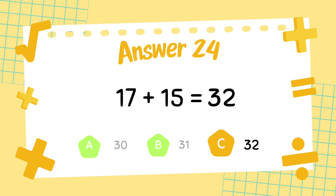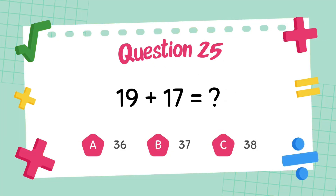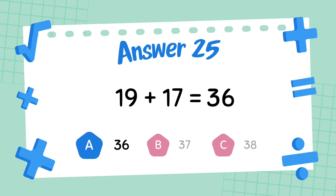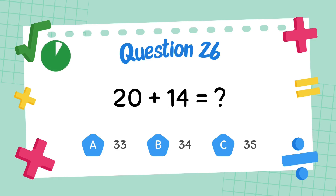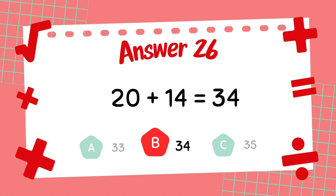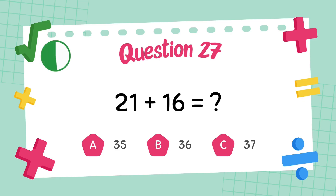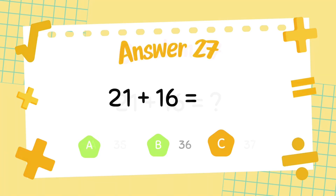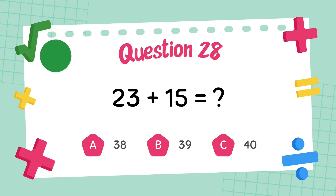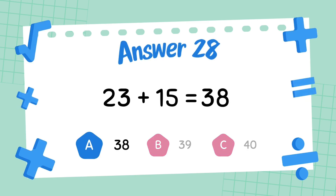What is 19 plus 17? The answer is 36. What is 21 plus 16? The answer is 37. What is 23 plus 15? The answer is 38.